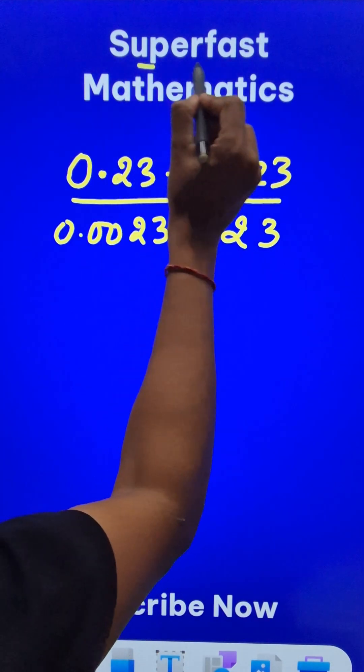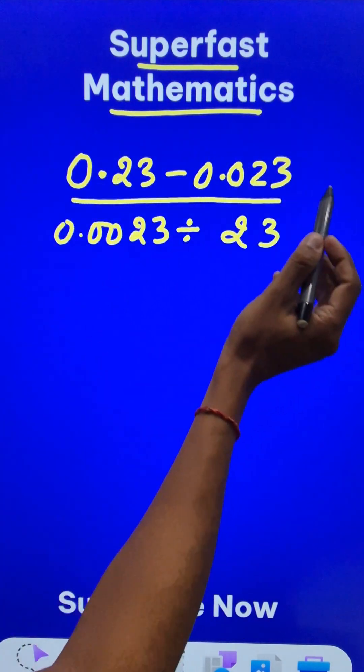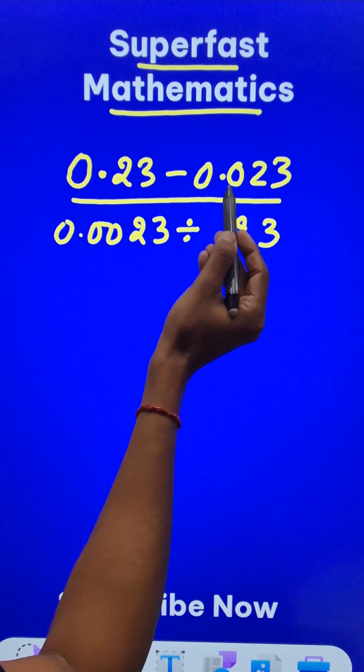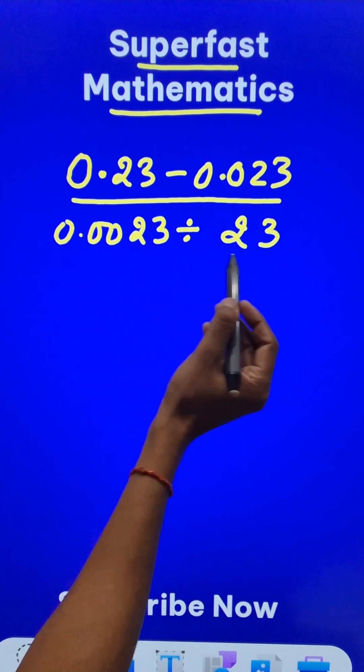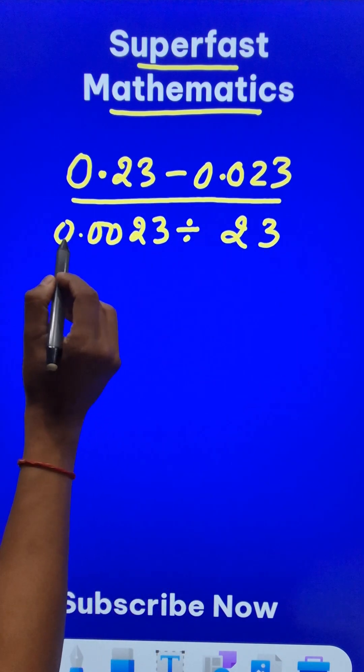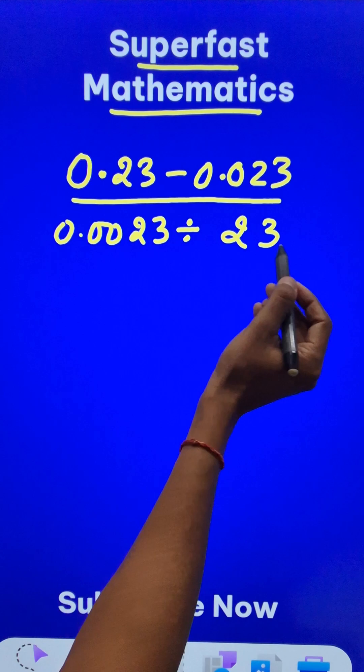Here is a bit of super fast mathematics. Look at this tricky question: 0.23 minus 0.023 in the numerator, and in the denominator, 0.0023 divided by 23.